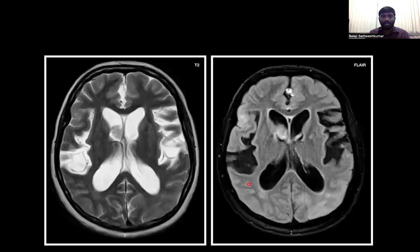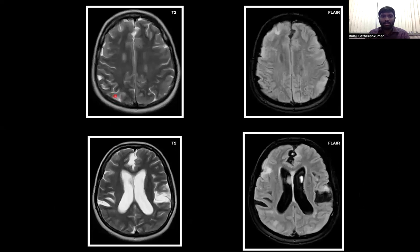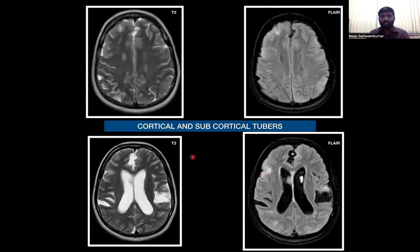Moving on to the next case, here we see a T2 hypointense and FLAIR hyperintense lesion involving the frontal horn of the right lateral ventricle. In the case of tuberous sclerosis, this is diagnostic of a subependymal giant cell astrocytoma. From the same patient, we also see discrete and confluent T2 FLAIR hyperintensities in bilateral frontal and parieto-occipital regions, suggestive of cortical and subcortical tubers in tuberous sclerosis.